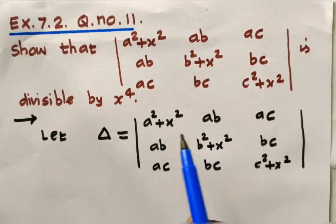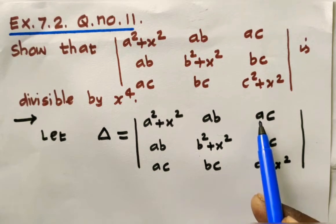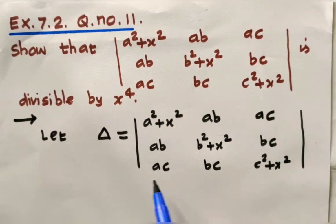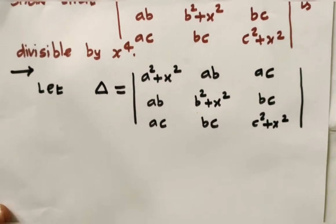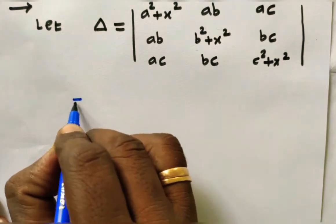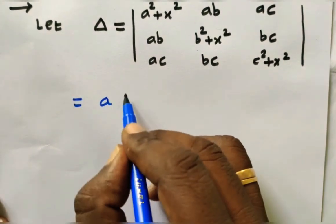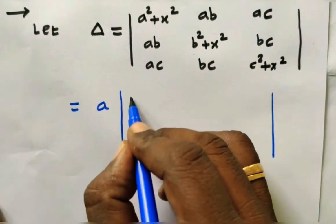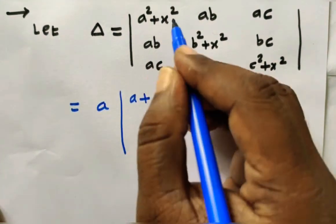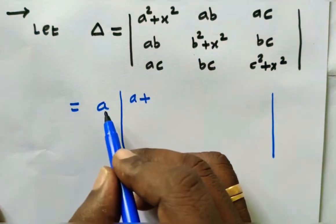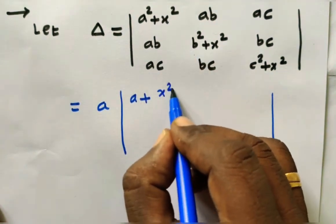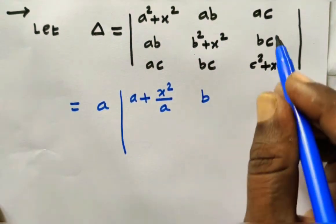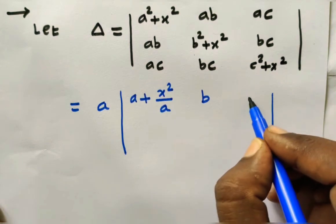In R1, A is the common element, so take A outside from R1, B from R2, and C from R3. Now we can write delta accordingly. A is common in R1 — taking A out, remaining is A squared. Then we have x squared next to it; since A was taken out, we get x squared divided by A. Similarly, for the B column: B is common, remaining is B, then x squared divided by B.